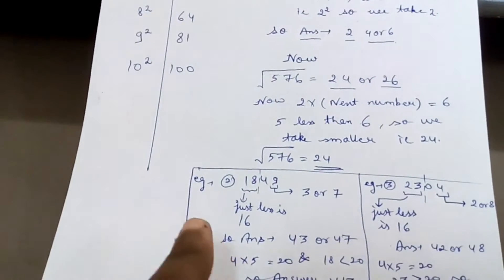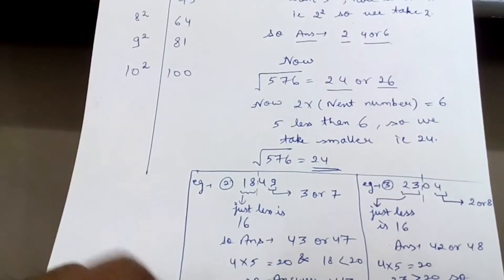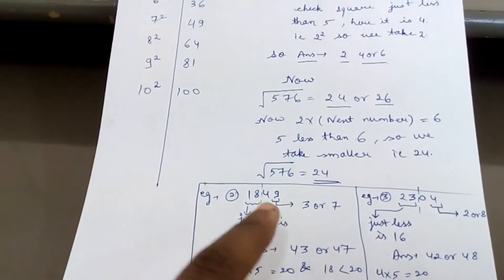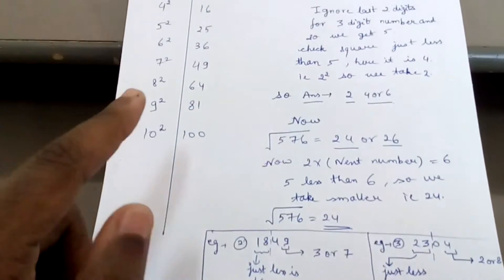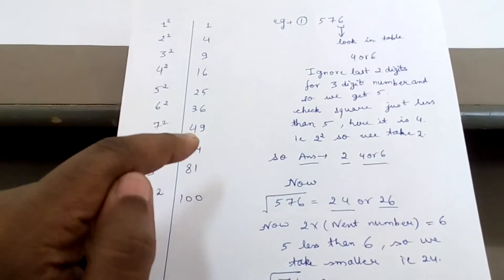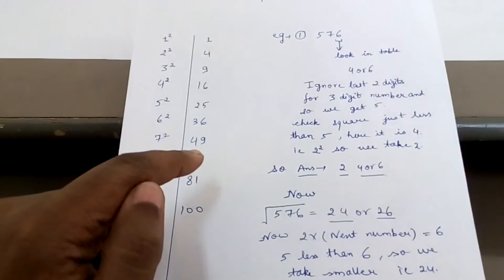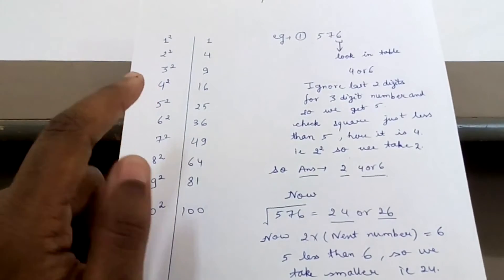Now this is a four-digit number. So you have to take unit digit, that is 9. So where 9 comes: 9 comes in 3 and here, here, and here. So our unit digits of the root will be 3 or 7.